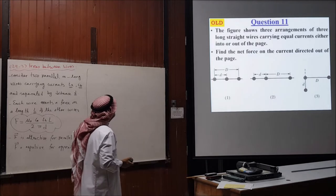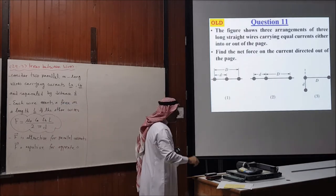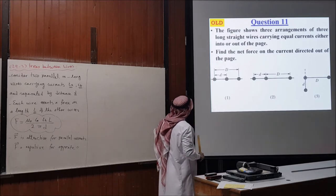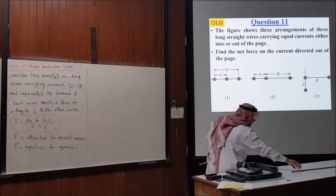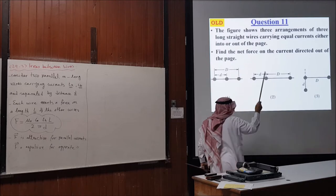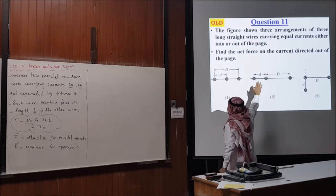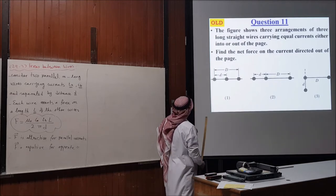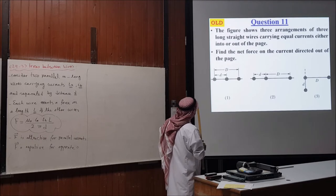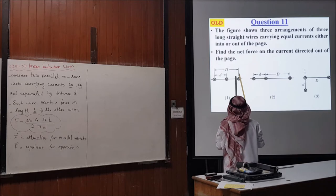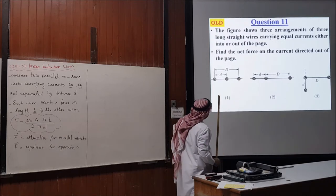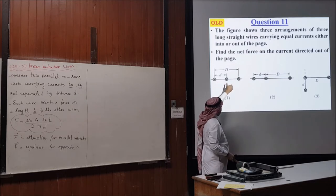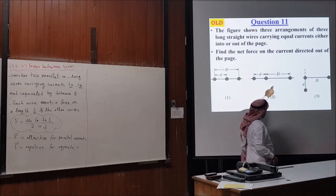Let's take an example — question 11 from the old edition. The figure shows three arrangements of three long straight wires carrying equal currents, either into or out of the page. We need to find the net force on the current directed out of the page (wire 3). The distance between wires 1 and 3 is always small d, and between wires 2 and 3 is always capital D.